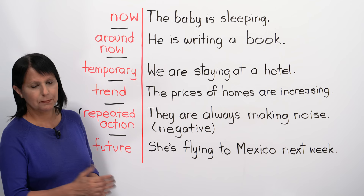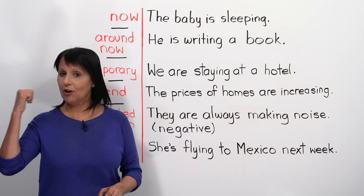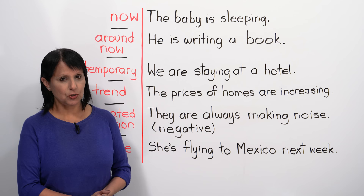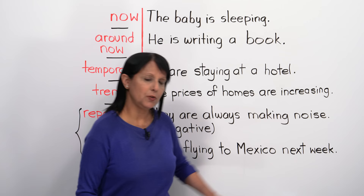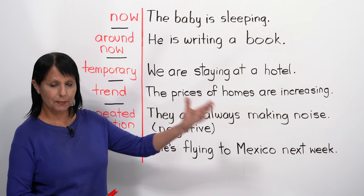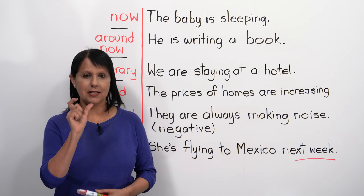Another point: although this tense is called the present continuous, sometimes we can actually use it to talk about the future, but only in a special way. For example, 'She is flying to Mexico next week.' Without 'next week,' it means she's flying right now. So when using this tense to talk about the future, you have to add a future time reference — like next week, tomorrow, next summer, or next year — to give it a time in the future.